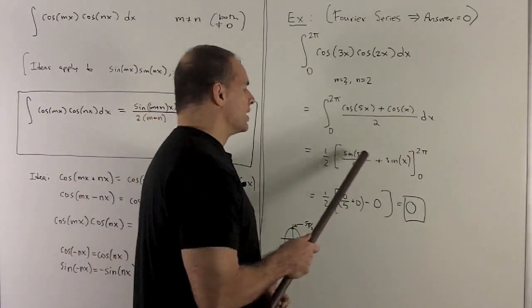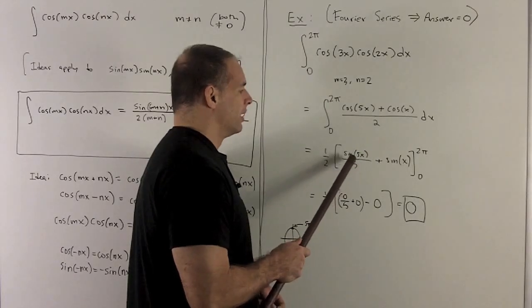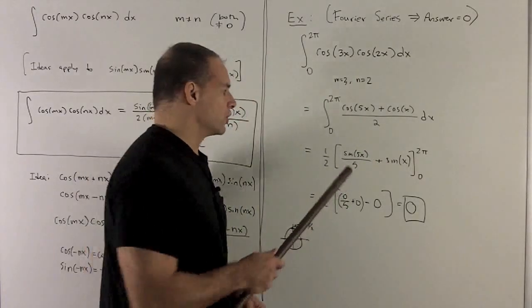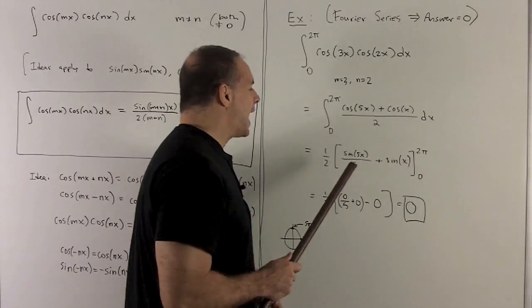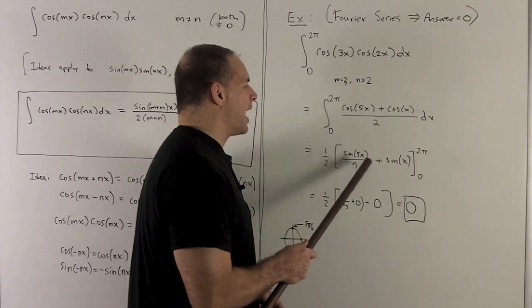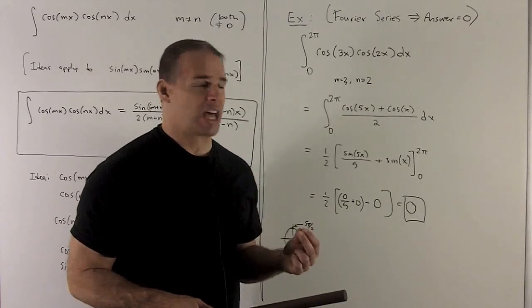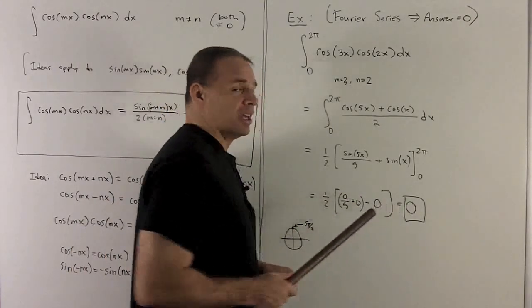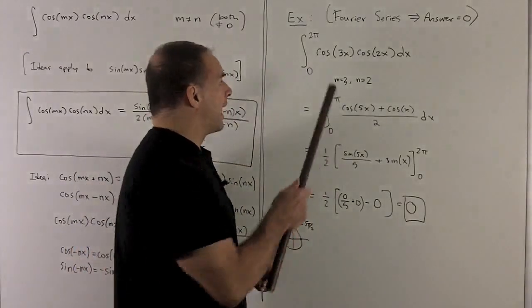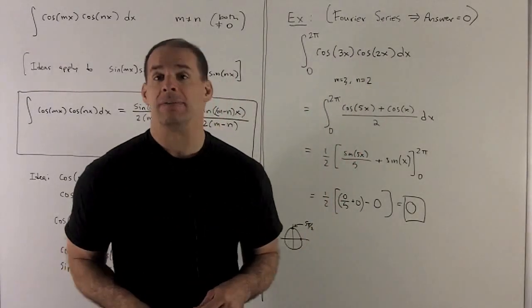Well, if I put 0 in the sine, it doesn't matter what the coefficient is here. It's going to go to 0. Sine of 0 is always 0. So nothing will come out of the second term. For the 2 pi, note we're going to have sine of 10 pi and sine of 2 pi. Okay, any multiple of pi gives me 0 for sine. So we're going to get 0 here, too. And so my final answer is going to be 0. So what we have here is this integral is 0, and that's good if I'm looking at Fourier series.